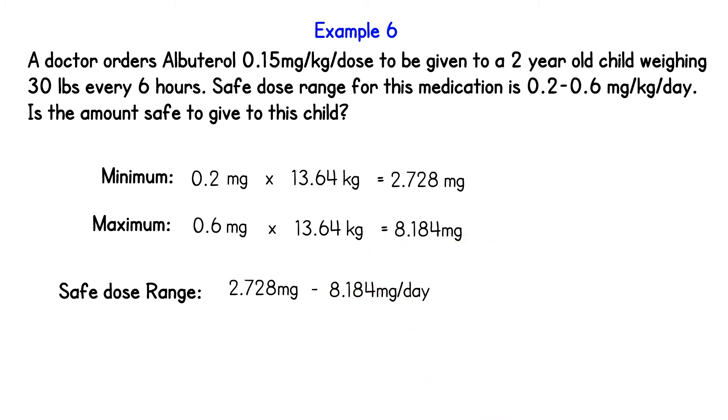Keep in mind that this range is per day and not per dose. So now we have to figure out, because we have 2 milligram Q6 hours, and we do know that 24 divided by 6 is 4, we'll be giving this medication 4 times per day.